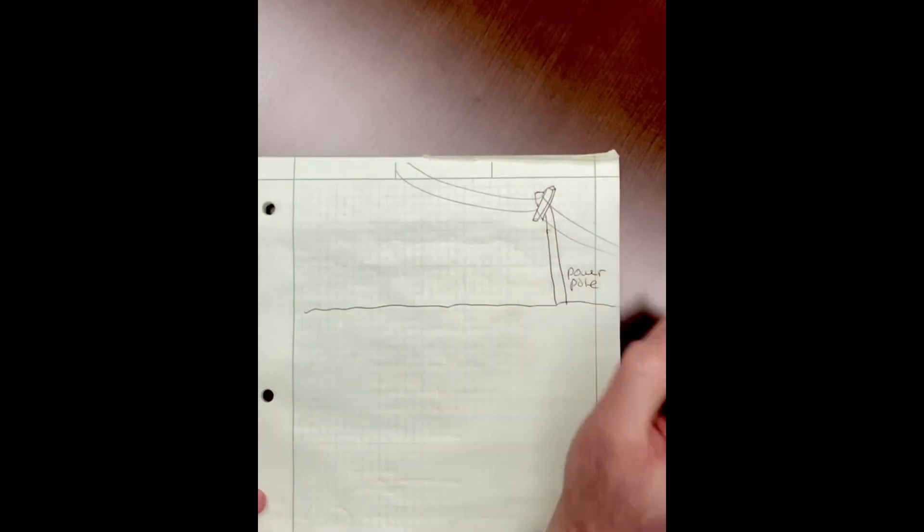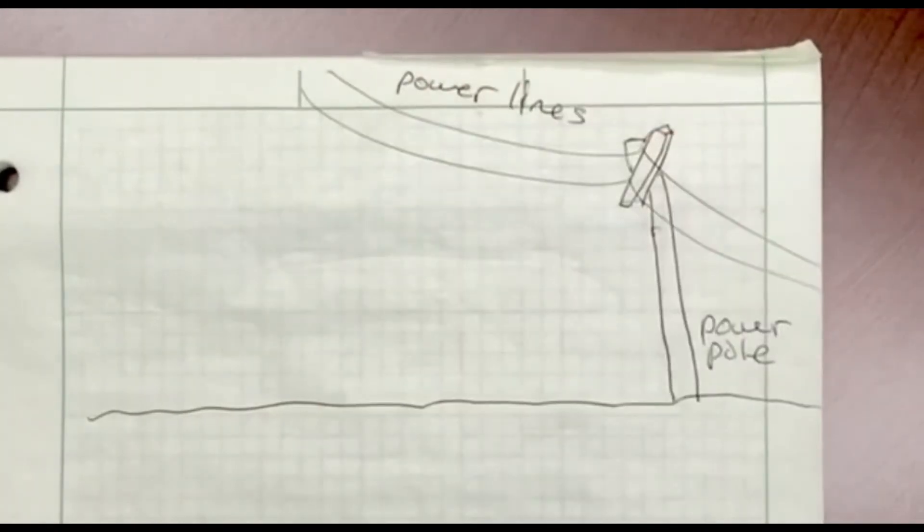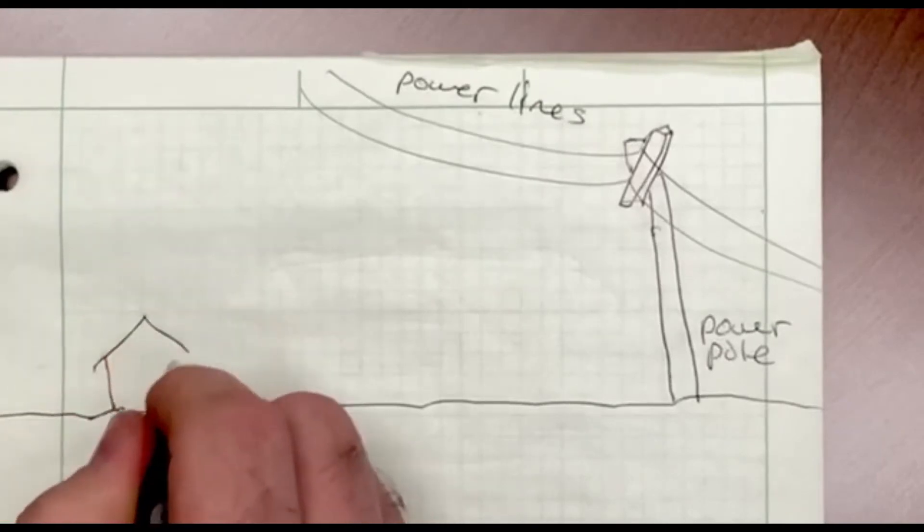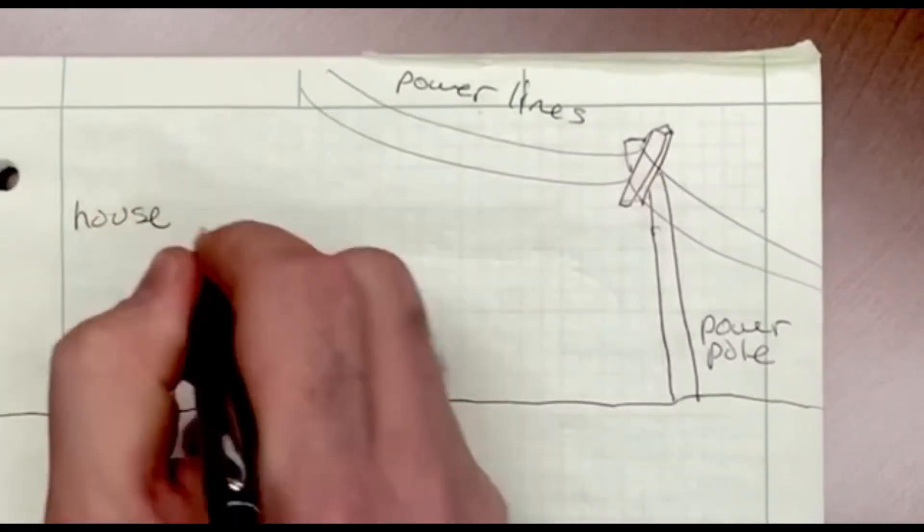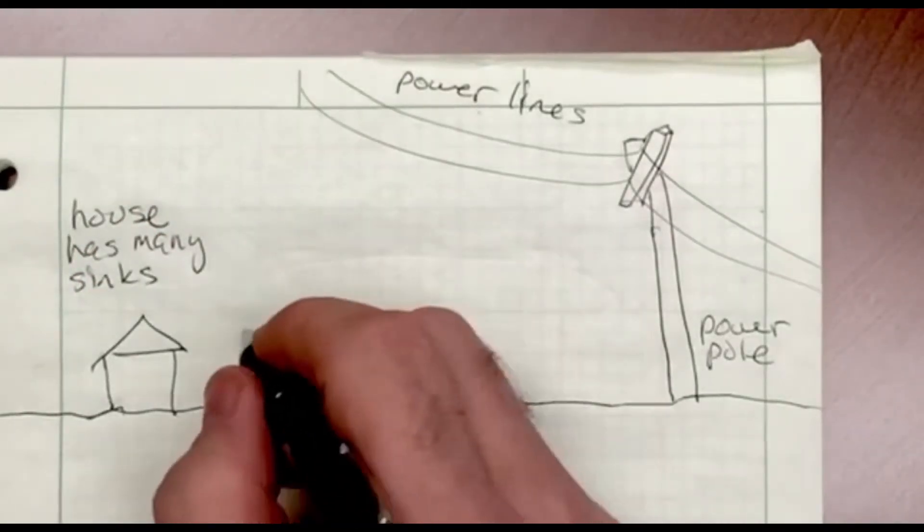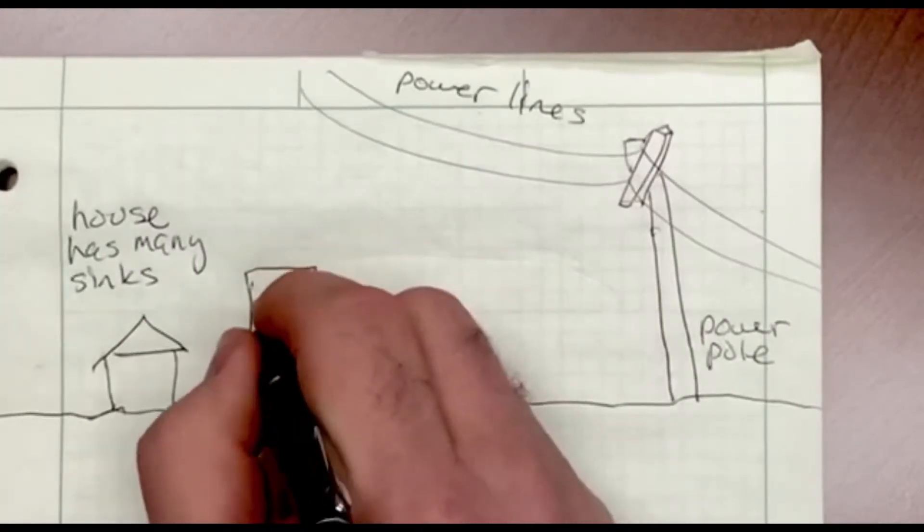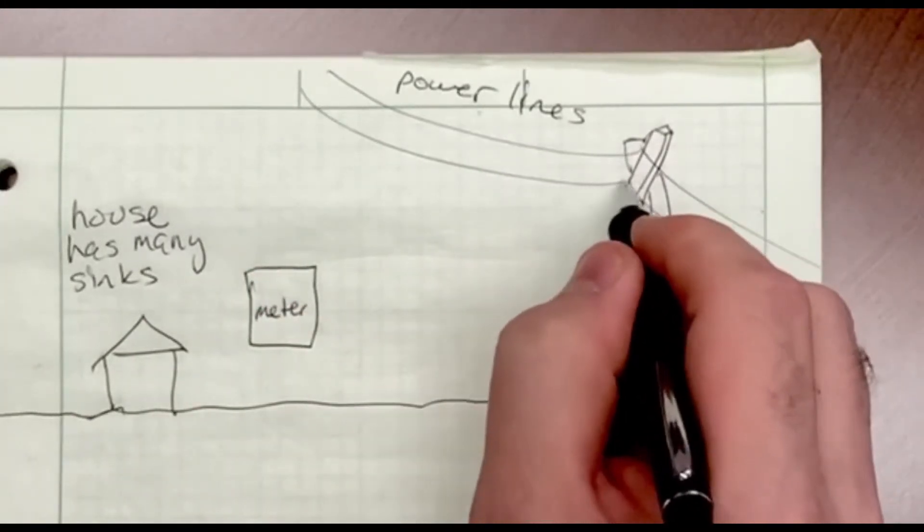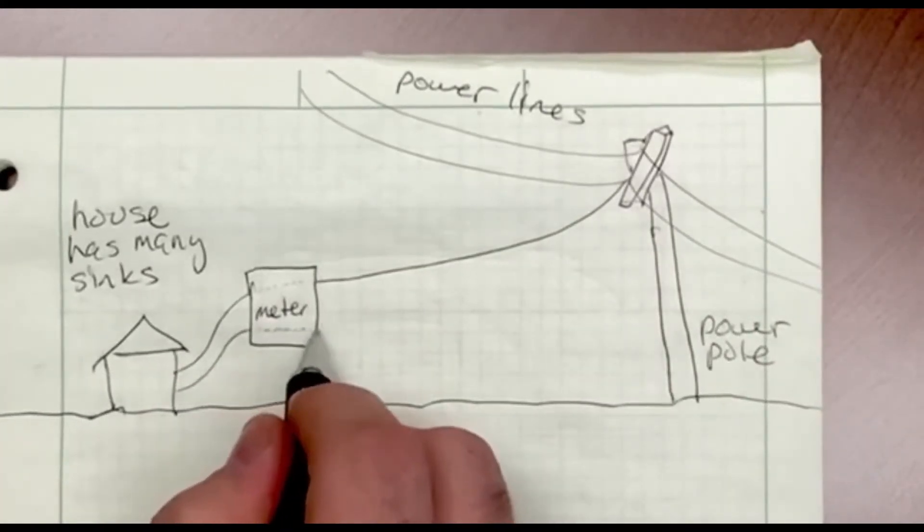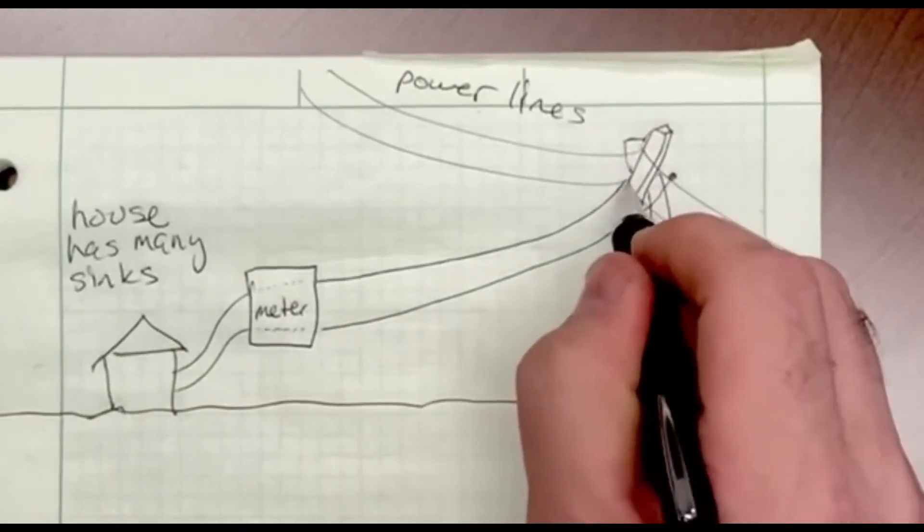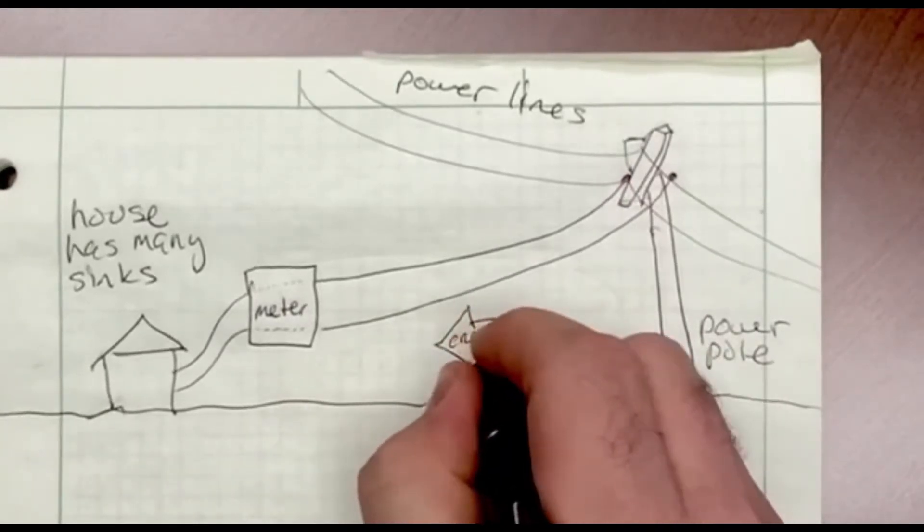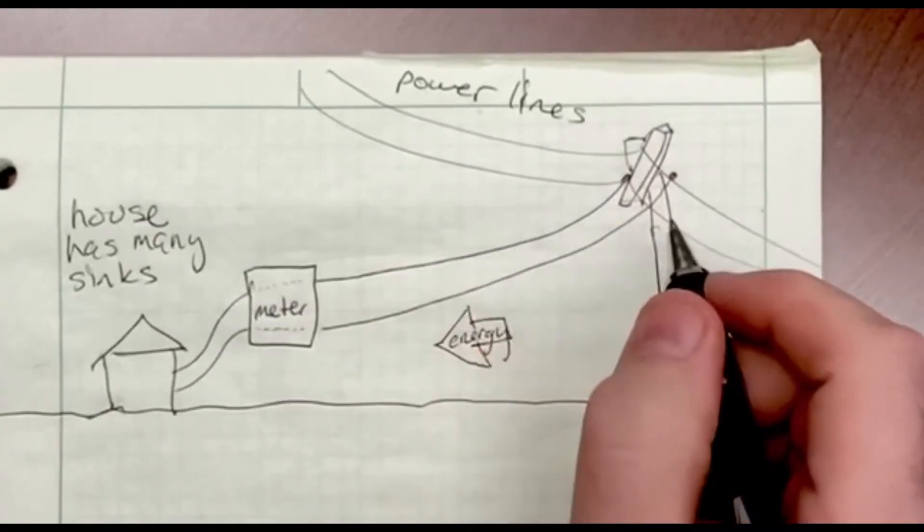What I've drawn is a little power pole with a couple of power lines. This is a simple system with only two lines and no transformers. I want to deliver power from these lines to my house, and the house has many energy sinks. I'm going to connect wires from these two conductors on the power distribution system and direct energy into the house and measure it through the meter.